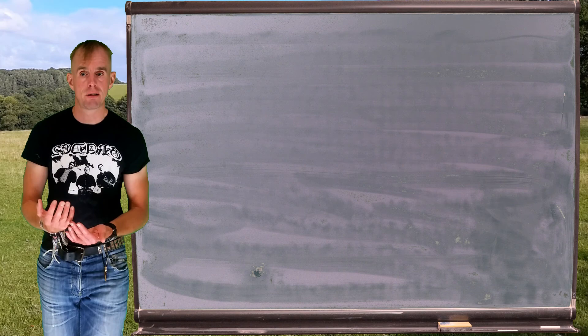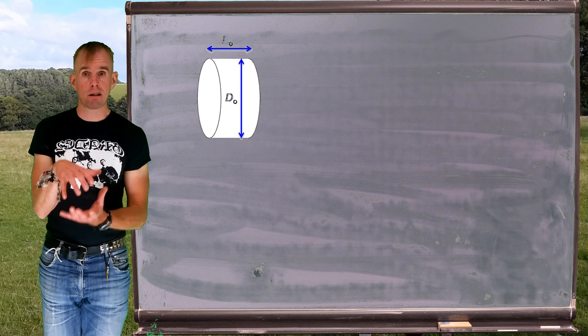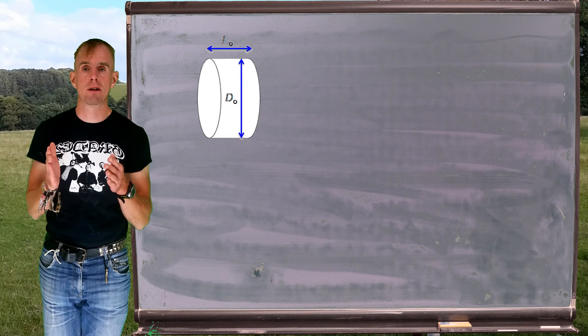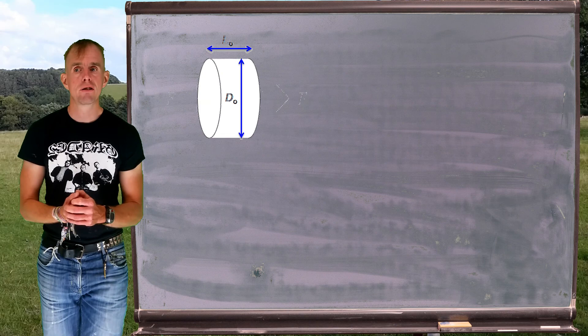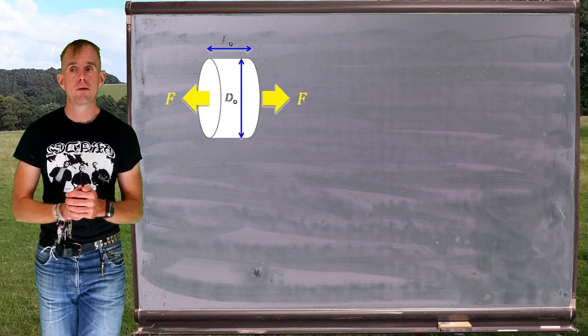So on the board in front of you I have put a schematic diagram of a cylinder of diameter d0 and of length L0. This is my initial cylindrical state. I'm going to deform this cylinder uniaxially. I'm going to do that by applying a force in the axial direction equally. So I'm going to stretch this cylinder of material out and as I do so the diameter will decrease and the length will increase.